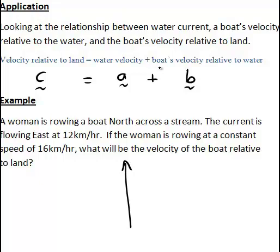To be consistent with our above relationship, I'll call that vector B. The current is flowing east at 12 kilometres per hour, so east is in this direction. That relates to the current, so we'll call that vector A, and right away we see that vector has magnitude 12.